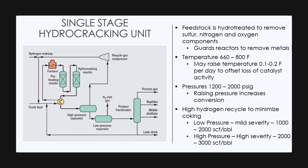It may raise temperature 0.1 to 0.2 degrees Fahrenheit per day to offset loss of catalyst activity. Third point, the pressure ranges between 1200 to 2000 PSIG. Raising pressure increases conversion. So if you want more conversion, keep the pressure towards 2000.